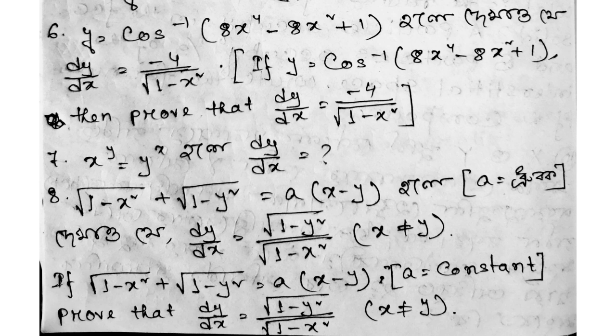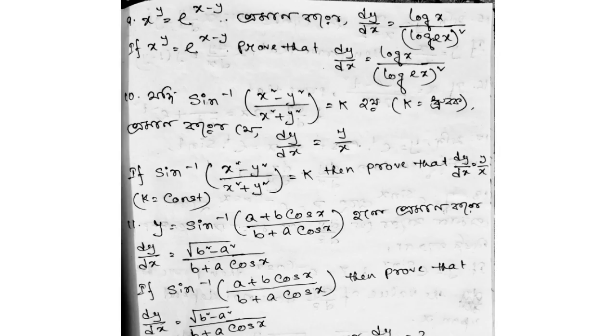For question 6, dy/dx equals minus 4 divided by root over (1 minus x squared). Question 7: x to the power y equals e to the power (x minus y) — prove that dy/dx equals log x divided by (log ex) whole squared.